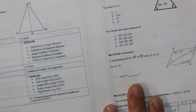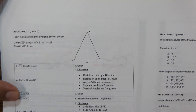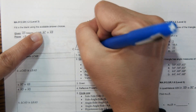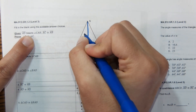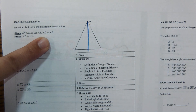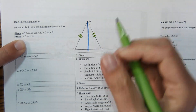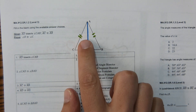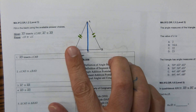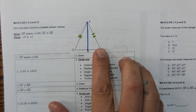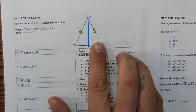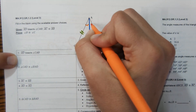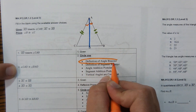The next proof involves Side-Angle-Side. It's given that AD bisects angle CAB, and AC is congruent to AB. We want to prove that angle ADB equals angle ADC. If AD bisects angle CAB, then the two sub-angles are equal by the definition of angle bisector. The given information tells us AC is congruent to AB.